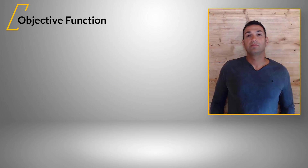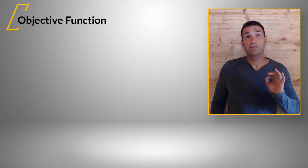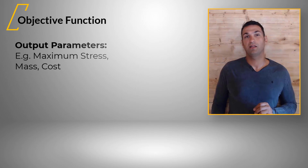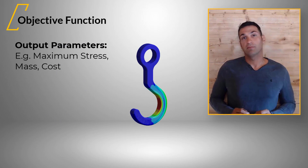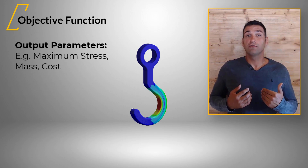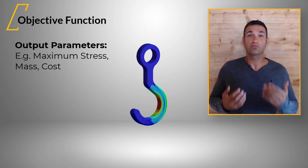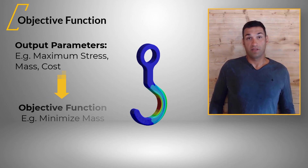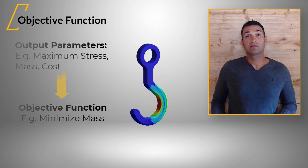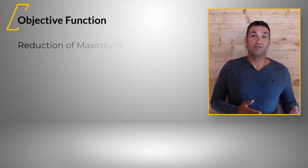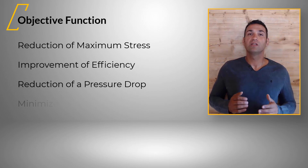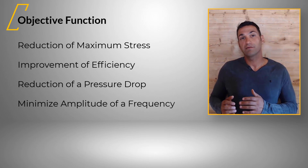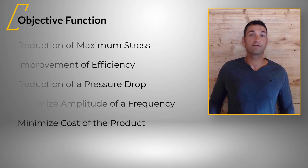The second term is the objective function. We also defined output parameters of our simulation. By using them to formulate what we want to achieve with optimization, we derive objectives. For this hook, the objective might be to minimize mass. For other products, the objective might be the reduction of maximum stress, the improvement of efficiency, the reduction of a pressure drop, or to minimize the amplitude of a frequency, or in general the cost of the product.